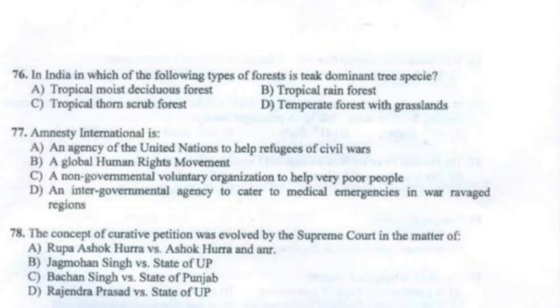Question 76: In India, in which of the following types of forest is teak the dominant tree species? The answer is Option A — tropical moist deciduous forest.